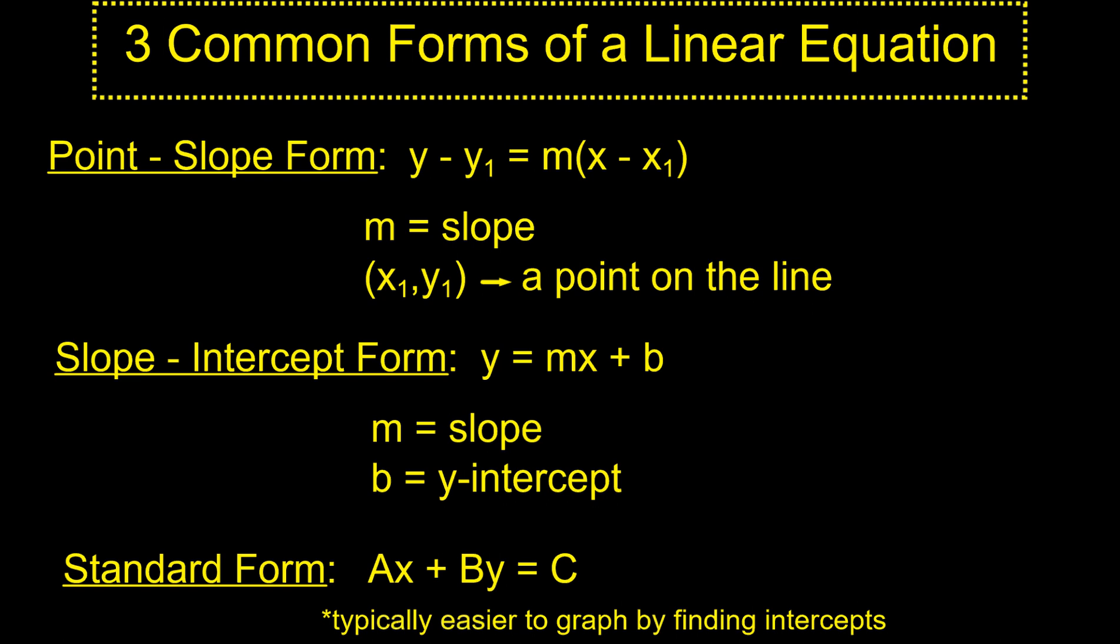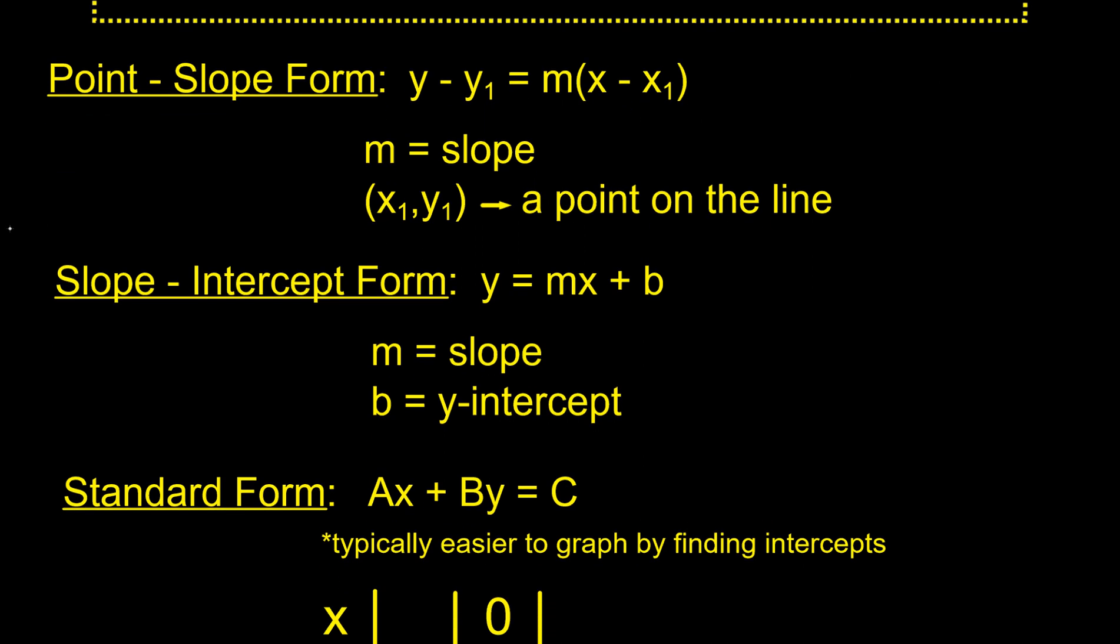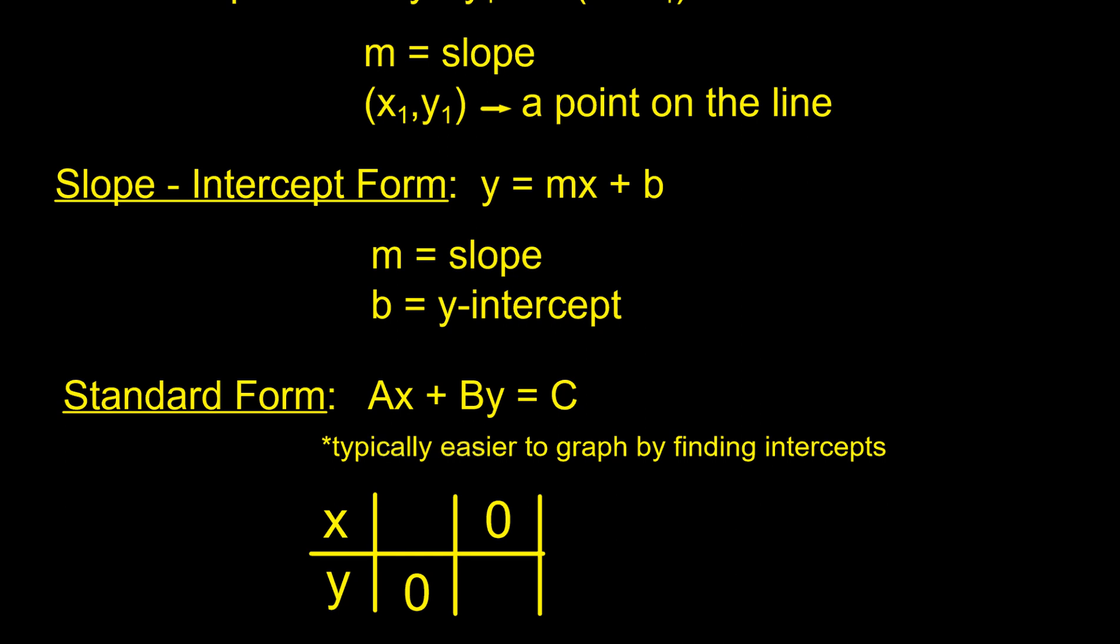All right, so the three common forms of a linear equation are these three forms. They're point-slope form. So if you haven't taken notes on this, this would be a great page to write down. Point-slope form is listed there. We just talked about this one. You know the slope and a point. You got your equation. Slope-intercept form. The m part of the equation is the slope. The plus b is the y-intercept. So that's if you know the slope and the y-intercept, you got that. And then standard form is ax plus by equals c. And we talked about how it's typically easier to graph by finding the intercepts of this graph.